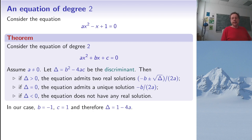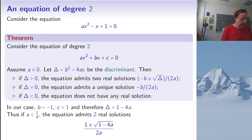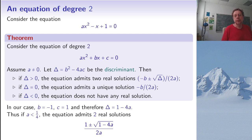In our case b equals minus one and c equals one, so the discriminant is one minus 4a. Therefore if a is strictly less than one quarter, there are two real solutions given by one plus or minus square root of one minus 4a, divided by 2a.